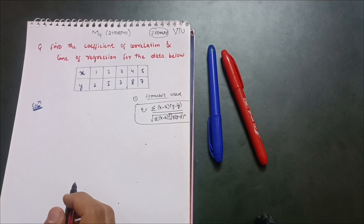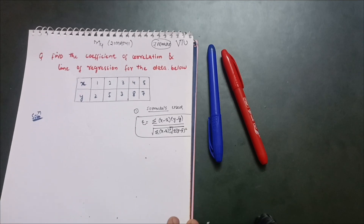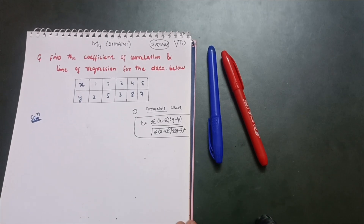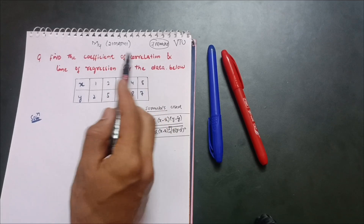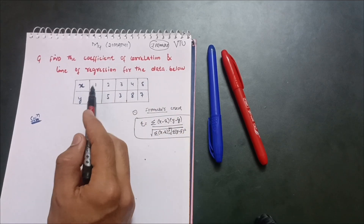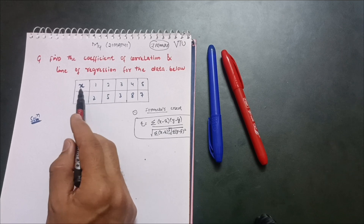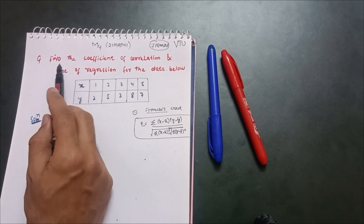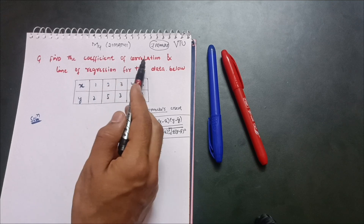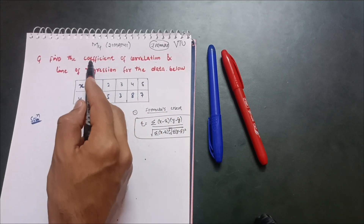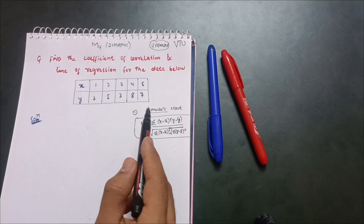Hello everyone, welcome back to my channel. This is an important question for Mathematics 21 / Math CS41: find the coefficient of correlation and lines of regression for the given data. X values and Y values are provided, and we need to find the coefficient of correlation and the lines of regression.